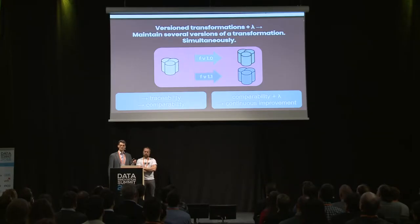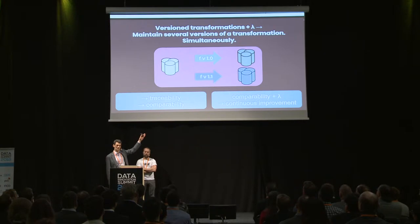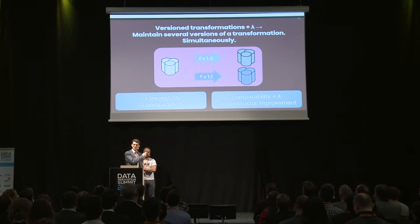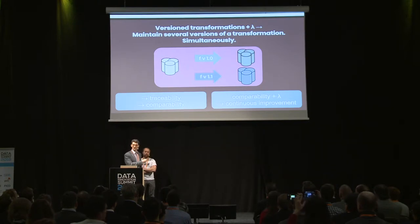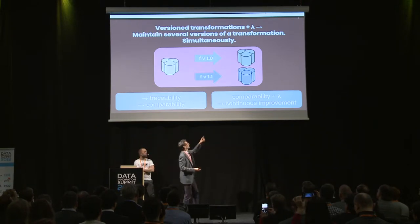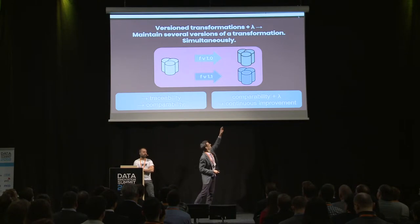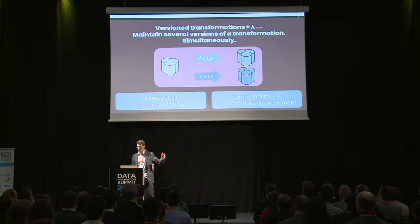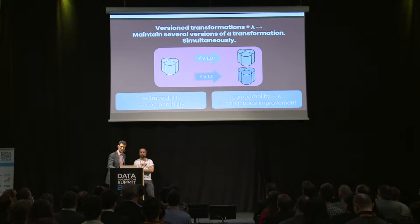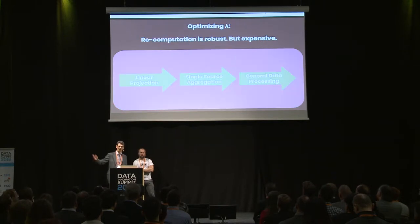Another super powerful feature of the lambda architecture is the ability to maintain several versions of the same transformation simultaneously. At the top you have transformation F version 1.0; you then deploy a blue transformation F version 1.1, and you can compare the output — the gray database versus the blue database — for any number of versions running simultaneously over the same input datasets. This gives you full comparability.